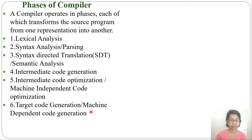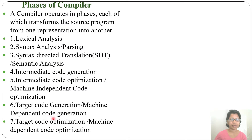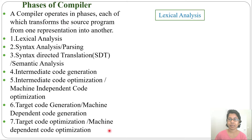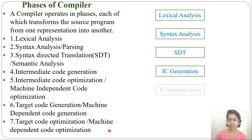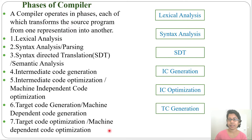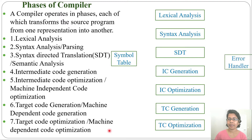Seventh is target code optimization or machine dependent code optimization. So the phases are: lexical analysis, syntax analysis, syntax directed translation, intermediate code generation, intermediate code optimization, target code generation, and target code optimization. There is also a symbol table and error handler.